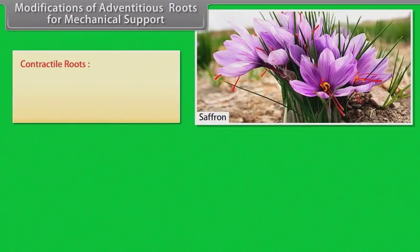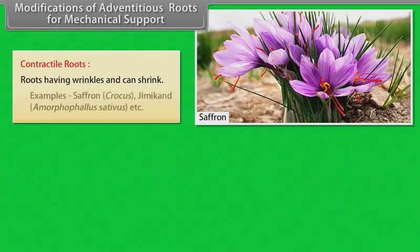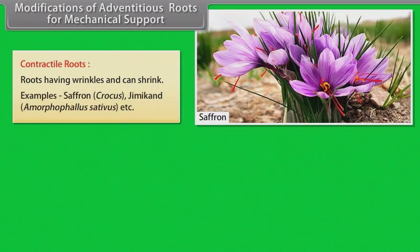Contractile roots: Roots having wrinkles that can shrink. Examples: saffron, Jimmycund, etc.